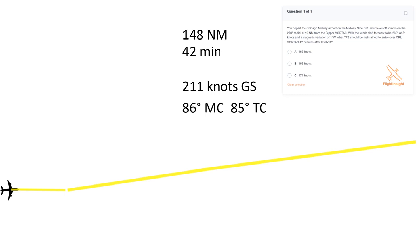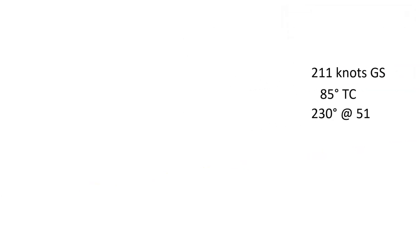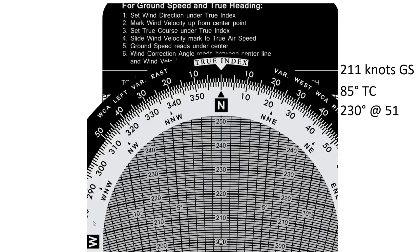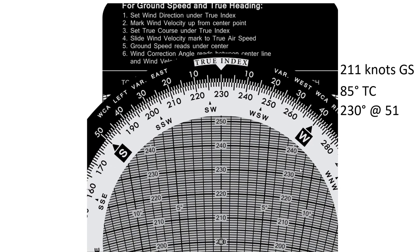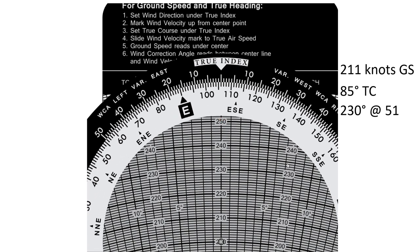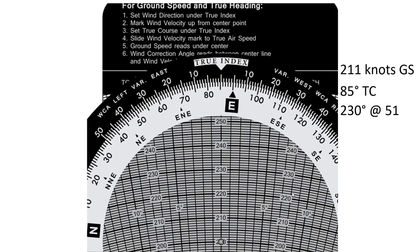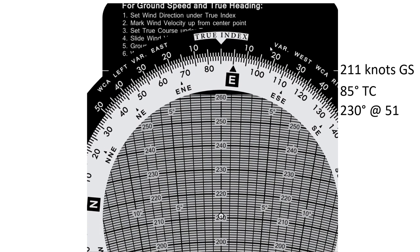The wind aloft is 230 degrees at 51 knots. Back to the E6B wind side — we start by sliding wind direction under the true index, then mark from center for the wind speed of 51 knots. Next, we spin to set the true course of 085 degrees under center. Since we know our required ground speed rather than true airspeed, we slide the card so that the ground speed of 211 reads under center.